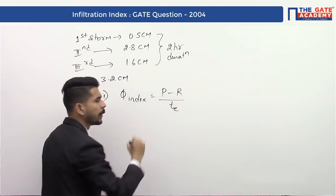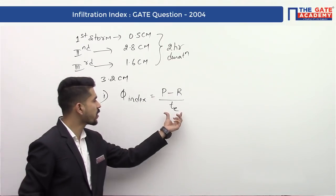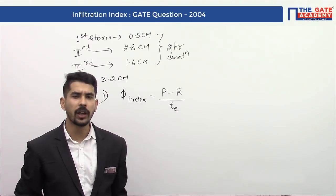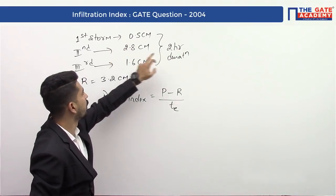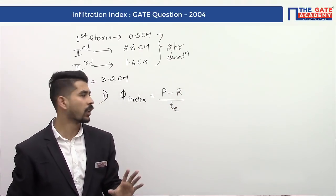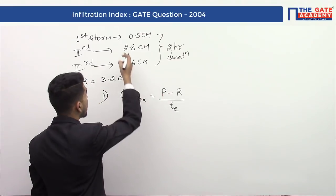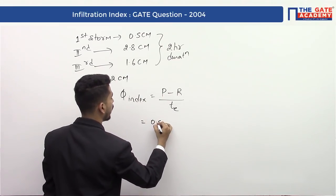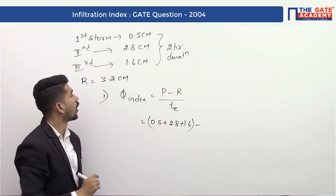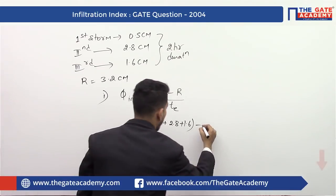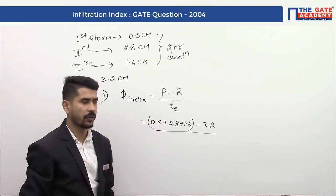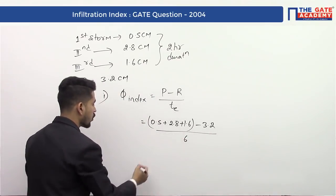In the first step, phi index = (P - R) / te. At this moment I don't know the duration of effective rainfall, so I will assume that in the entire duration of the storm — three periods of two hours = six hours — I am getting runoff. Total precipitation is 0.5 + 2.8 + 1.6, minus R which is 3.2, divided by te = 6 hours.